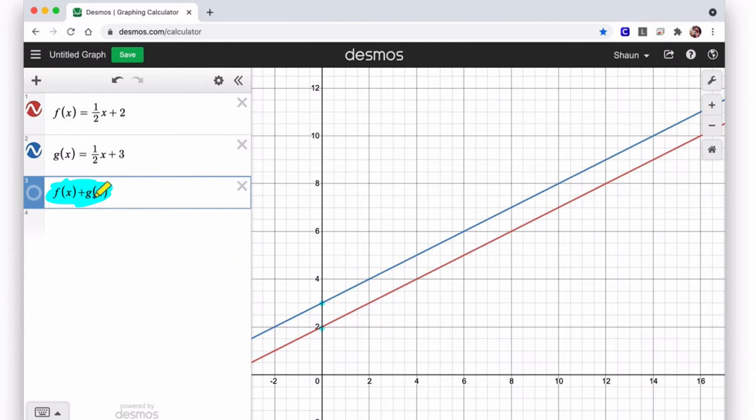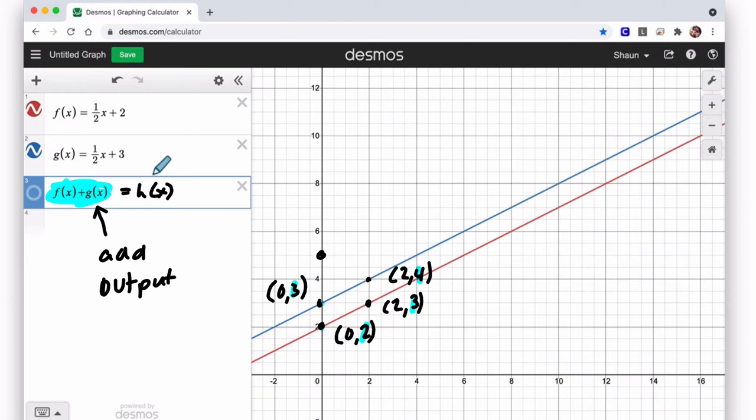So what does it mean to add two functions? Well, it means specifically that you are adding the outputs. You add the outputs. That's what you're really doing here. So for example, at 0, this point on f of x is 0, 2. This point on g of x is 0, 3. So the first point on our new function, let's call it h of x, is going to equal 2 plus 3 and it's going to start at 5. But then let's jump up here. If I have an input of 2 in the first function, it's 2, 3 and then here it's 2, 4. Well, now the output is going to be 3 plus 4 and that's at 7.